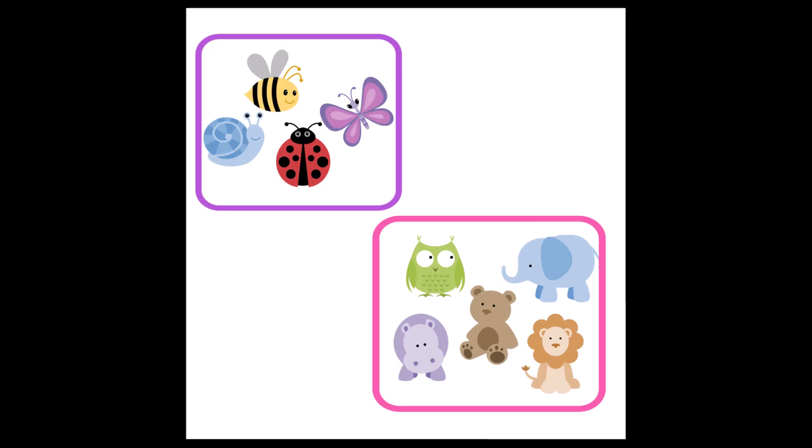Okay, let's get started with these two groups of animals. Do you see them? One group is in a purple box and the other one's in a pink box. Let's start by comparing how many animals are in each box. Can you count and see? In the purple box, let's count those first: one, two, three, four. There are four animals in the purple box.